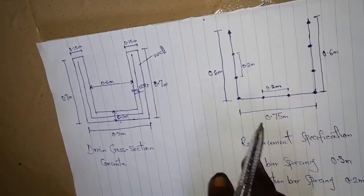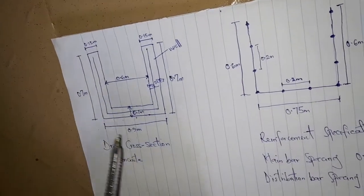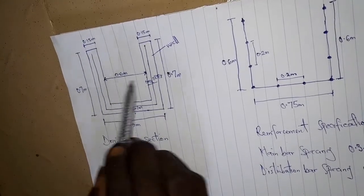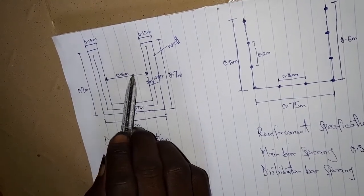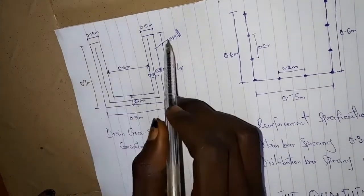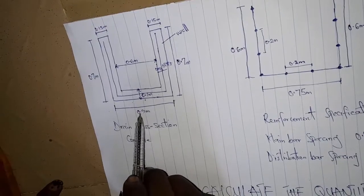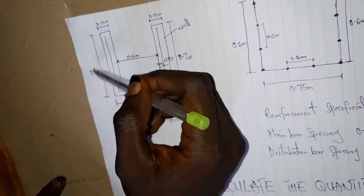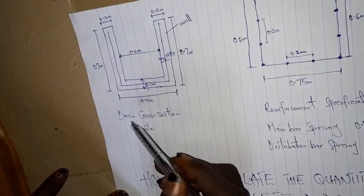This is the reinforcement diagram. Looking at the concrete diagram, we have the in-to-in of the drainage to be 0.6 meter. The out-to-out, including the drainage wall, will be 0.9 meter, while the height is 0.7 meter from the top of the drainage to the bottom of the base.